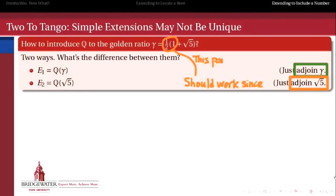So why can't we just adjoin the irrational part? Because this 1 half times 1, that part's already rational. So if we try throwing that in to Q, we're not going to get anything new and interesting. So why don't we just try throwing in the square root of 5? Do we get the same field just by throwing in radical 5 as we do by throwing in 1 half times 1 plus radical 5?